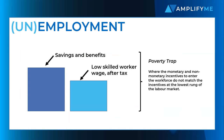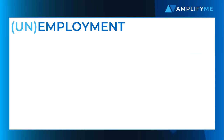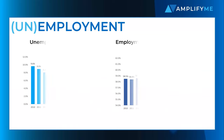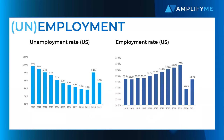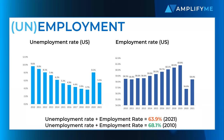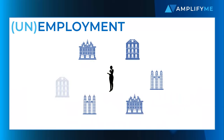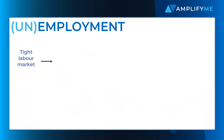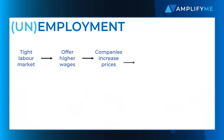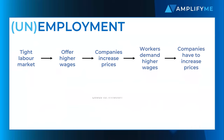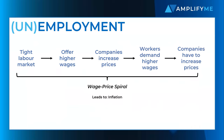Terminology is important as a country can have very low unemployment but also very low employment, which results in a decrease in productive capacity and therefore a decrease in economic growth. Far from being a good thing, low levels of unemployment might actually harm an economy. When unemployment is low, companies struggle to fill vacancies, resulting in lower economic output. A tight labour market is also inflationary as low unemployment forces companies to increase wages as they compete for a limited labour pool. This is called a wage-price spiral.